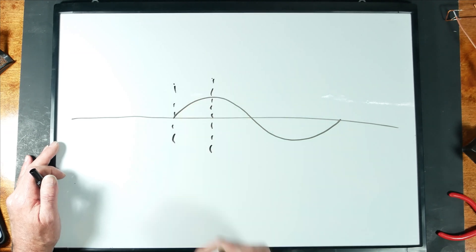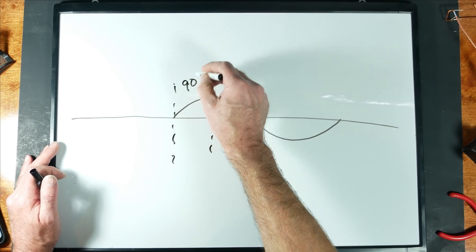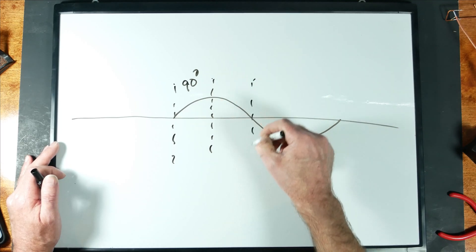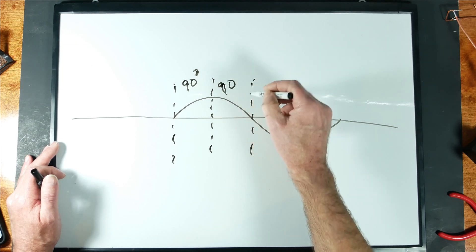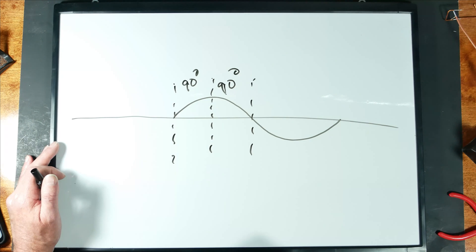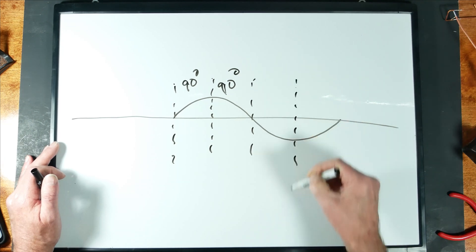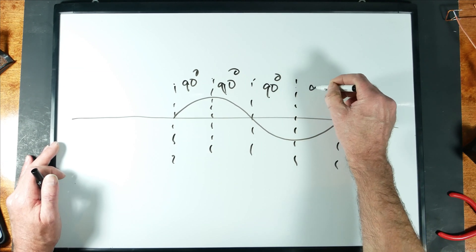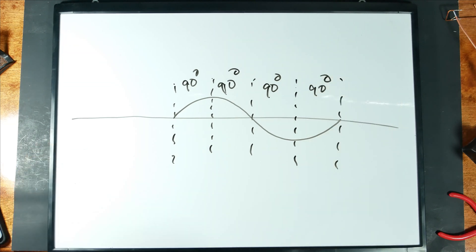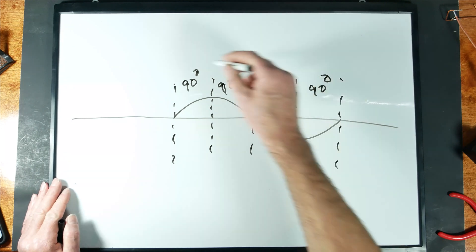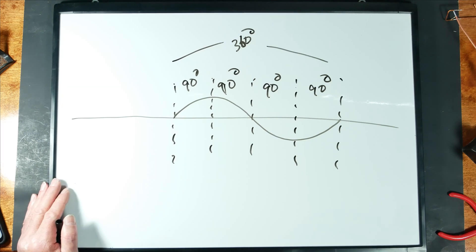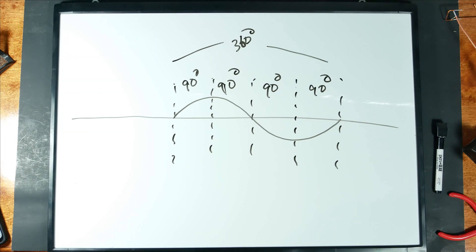So from here to here in a sine wave is what we call 90 degrees. And then from here to here is another 90 degrees. And we can keep going. We can come down here. Here's another 90 degrees. And then when we get back where we started, we have another 90 degrees. And if you add all this up, we're at 360 degrees.